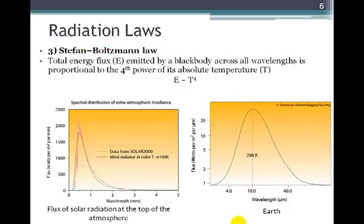The third radiation law is called the Stefan-Boltzmann law. It basically says that the energy emitted by an object, by a black body, is proportional to the fourth power of its temperature. So instead of having an equal sign, we have a proportional symbol. We're saying that the energy emitted is proportional to T to the fourth power.